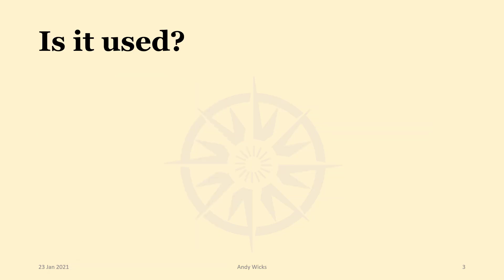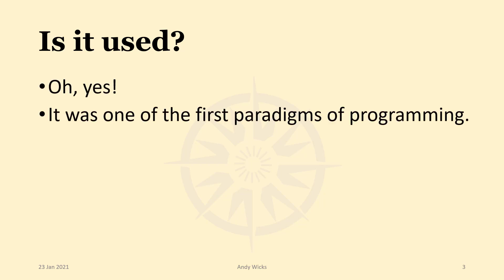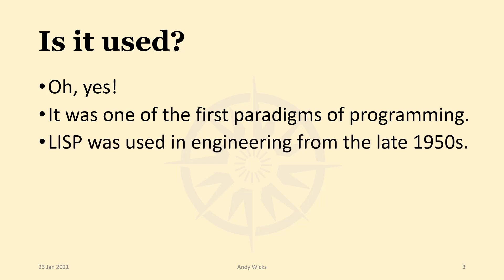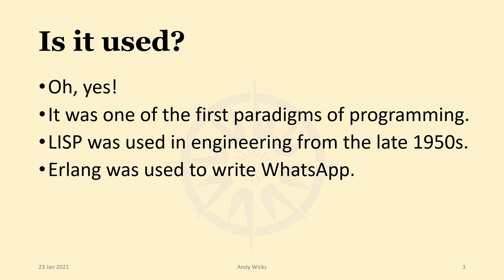Is it used? Well, the answer is quite definitely yes. It was one of the first paradigms of programming to be created and dates from the late 1950s. The original language was called Lisp, and Lisp was used in engineering. There are many kinds of Lisp, including Scheme that we're going to be using, but one form of Lisp is Erlang. Erlang was used to write WhatsApp.